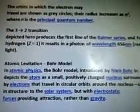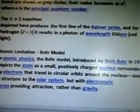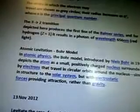The orbits in which the electron may travel are shown as gray circles. The radius increases as N squared, where N is the principal quantum number. The 3-2 transition depicted here produces the first line of the Balmer series, and for hydrogen, Z equals 1, it results in a photon of wavelength 656nm red light.